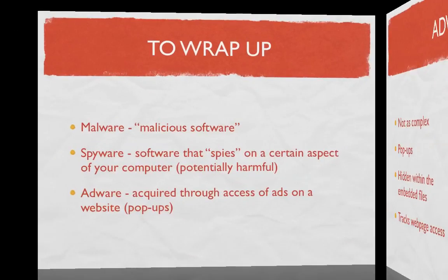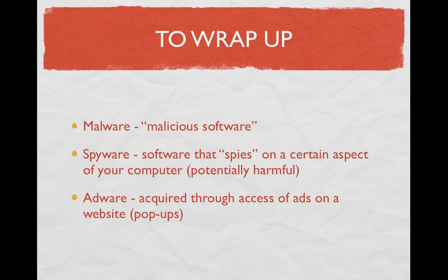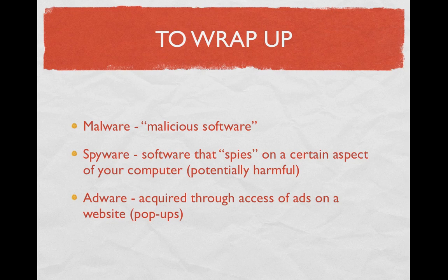So to wrap up: malware — just associate it with malicious software. It's bad software, something you don't want on your computer, and that's the general term. Spyware is a little bit more specific — it's a type of malware, a software that spies on a certain aspect of your computer, which is potentially harmful. And adware is acquired through access of ads on a website, commonly known as pop-ups, and a lot of people are generally more exposed to that type of malware versus others. That's a quick review on what malware, spyware, and adware are and the difference between each.